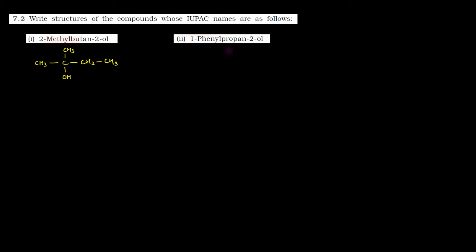Next part dekhte hain: 1-phenyl propane-2-ol. Teen carbon atoms ki chain hogi total. First, second and third carbon. Second position par kya hai — OH group — yeh humne likh diya. Aur first position par kya hai — phenyl. Phenyl ka matlab kya hota hai? Phenyl ka matlab hai benzene ring. Toh first position par hai phenyl group, second position par hai OH group. Ab carbon ki valences complete karenge by using hydrogen. Toh yeh hua CH2, yahan ek H aur yahan CH3. Toh yeh bana diya aapne 1-phenyl propane-2-ol.